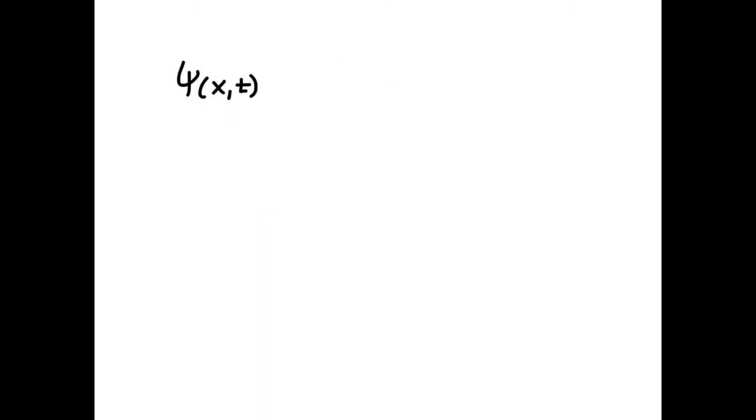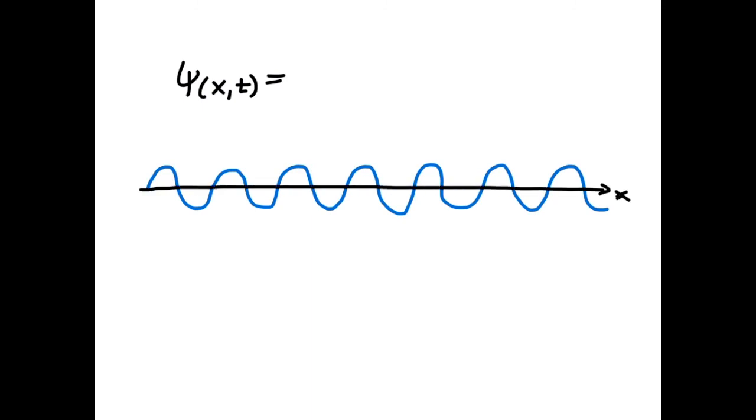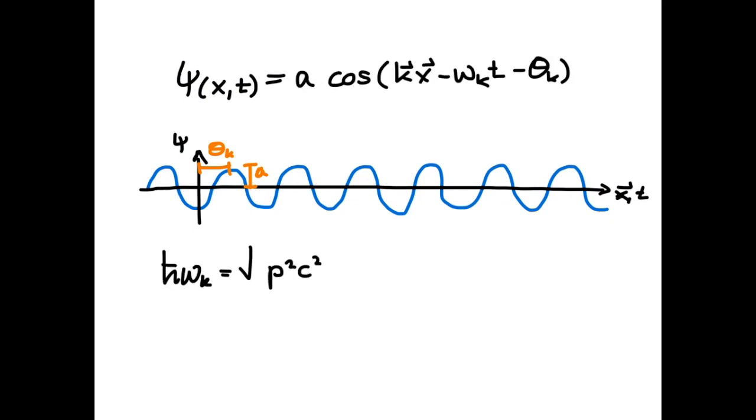You will notice that this is a wave equation, for which we can easily write down a solution. In the case of a real scalar field psi, it is a plane wave with some amplitude a and phase theta moving in space given by a cosine. Here again the frequency and the wave vector are connected.